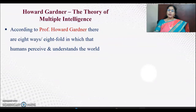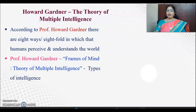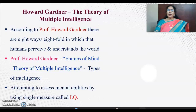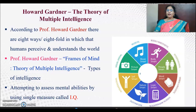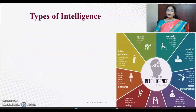Then Howard Gardner came up with the theory of multiple intelligence, which has become a very famous theory accepted by many people. According to Professor Howard Gardner, there are eight ways or eightfold in which human beings perceive and understand the world. He has written a book called Frames of Mind in which he wrote about the theory of multiple intelligences. He said that attempting to assess mental abilities using a single measure called IQ is insufficient, and he proposed eight types of intelligence.